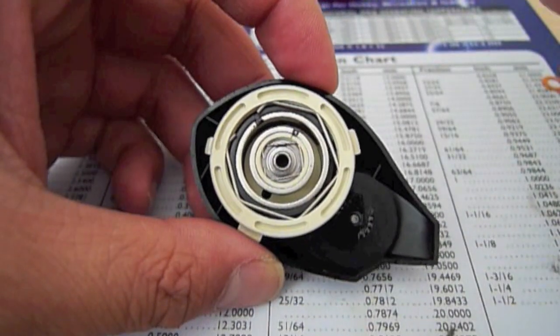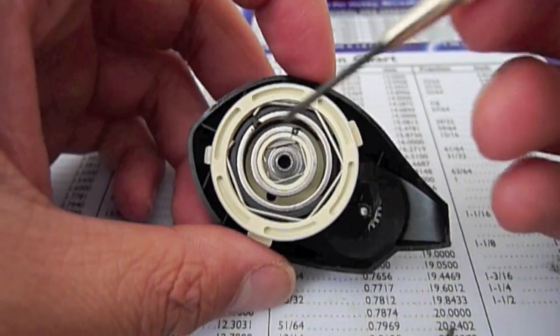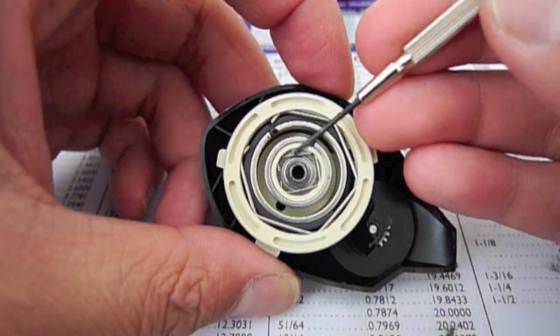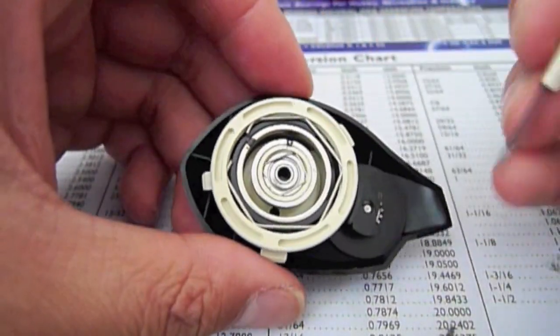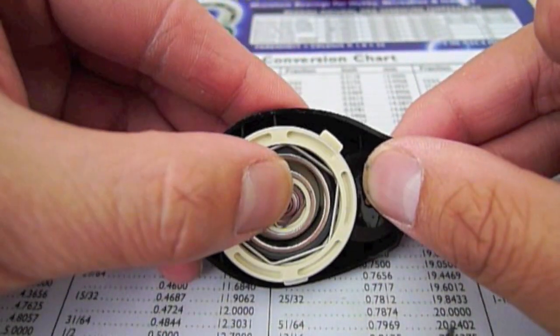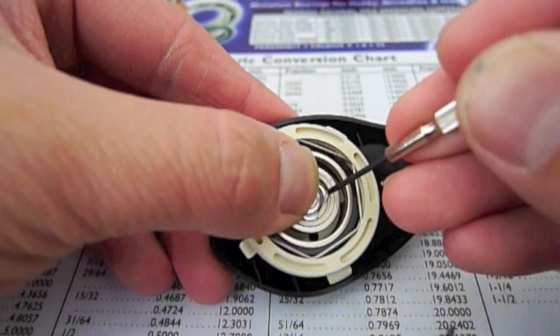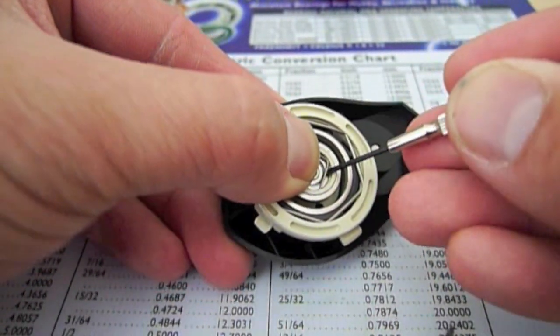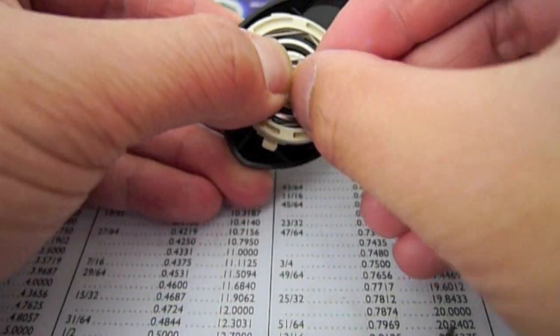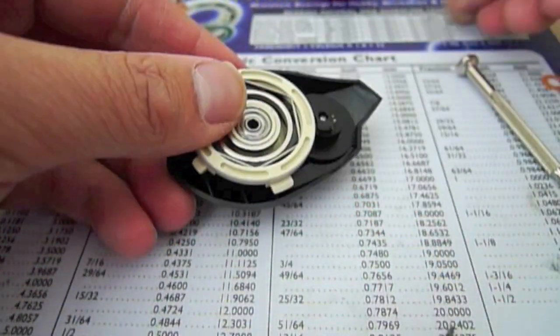The first bearing we're going to be replacing is the one on the side plate. As you can see, there's a retainer holding the bearing in place. What you want to do is take a finger and hold the retainer and remove it with a small screwdriver. The finger will prevent the retainer from flying away. And all you have to do is take the retainer off.